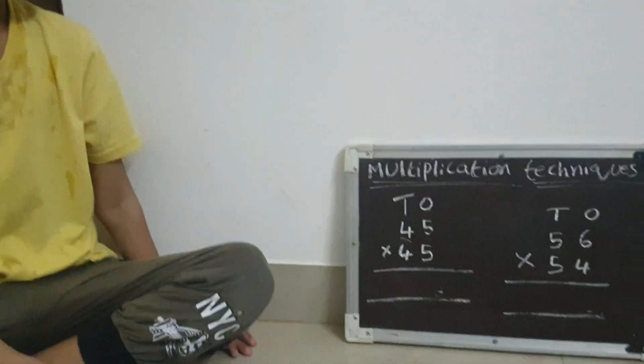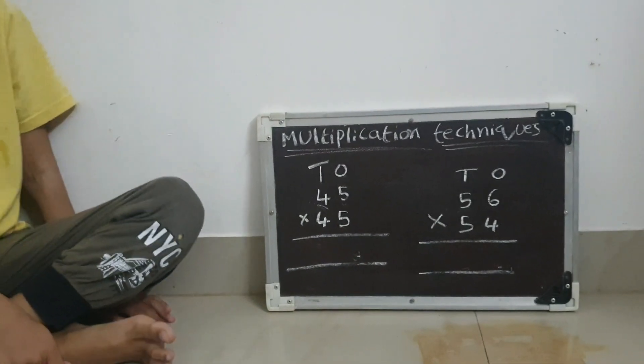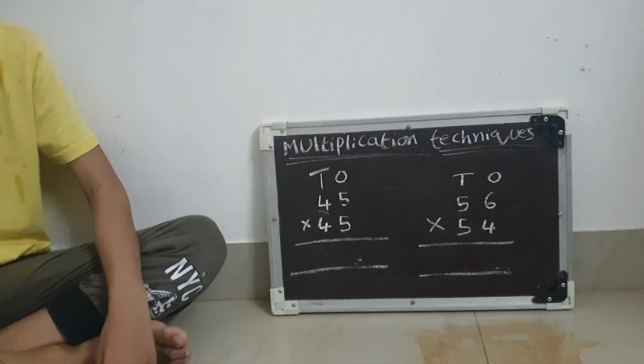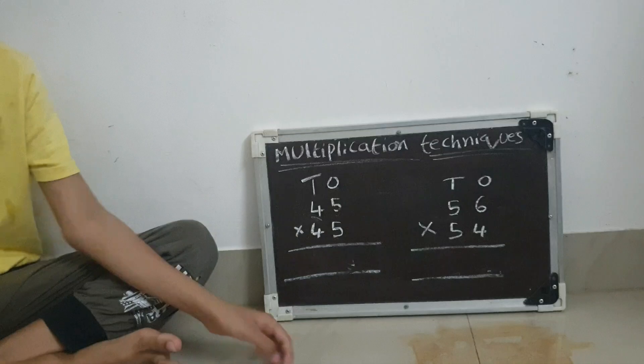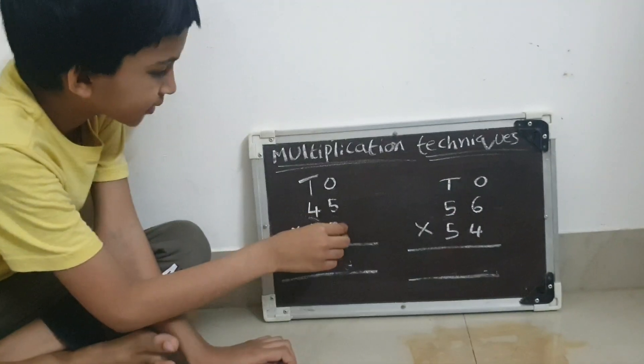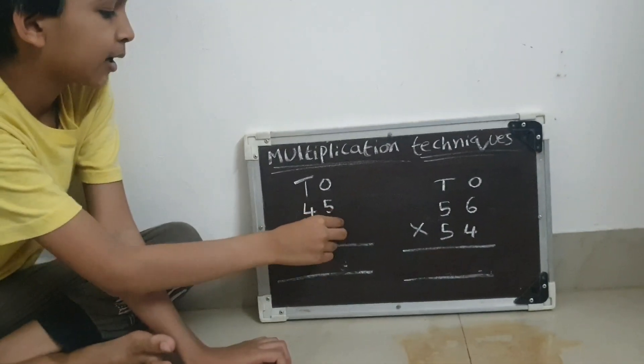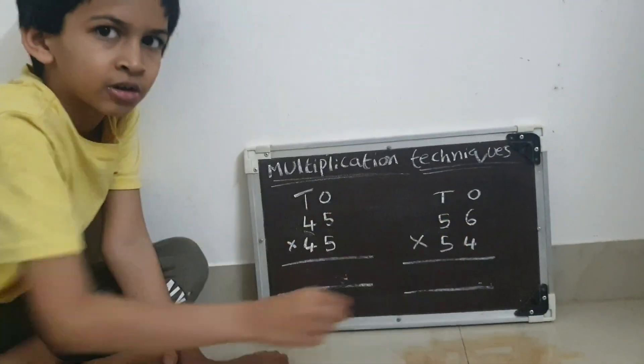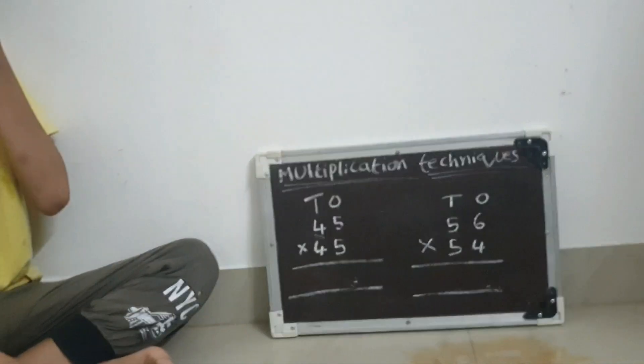Hi friends, welcome to my channel again. I'm going to show you my multiplication techniques. I put two problems. For this kind of problems, we need to follow the rules. The first rule: the sum should be 10. That means 5 plus 5 equals 10, 6 plus 4 is also 10.